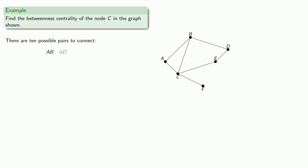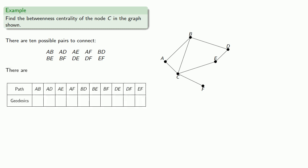And what makes betweenness centrality a little bit of work is not that the work we have to do is particularly difficult, but there's a lot of it. So let's get started. What we want to do is find out how many shortest paths there are and how many of those C is on.